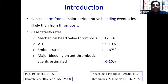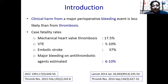It is important to remember that clinical harm from a major perioperative bleeding event may be less likely than from thrombosis. It appears more dangerous for a patient to develop thrombosis than to have a perioperative bleed. This is supported by evidence showing case fatality rates: mechanical heart valve thrombosis in the perioperative period is about 17%, VTE 5–10%, embolic stroke about 37%, compared to major bleeding on antithrombotic agents estimated at around 6–10%. So it's important to keep this in mind.